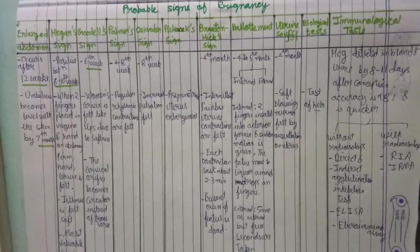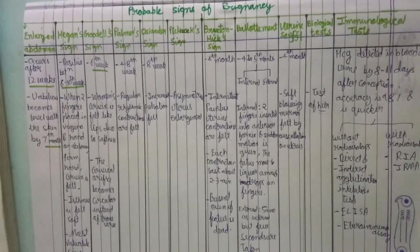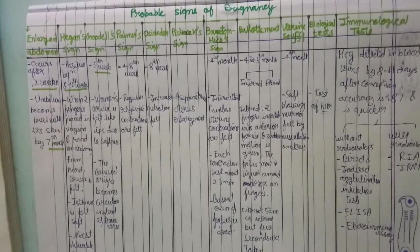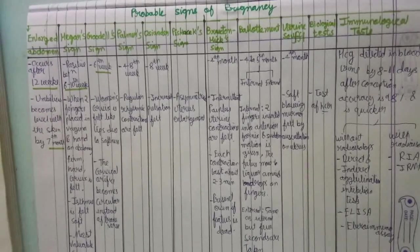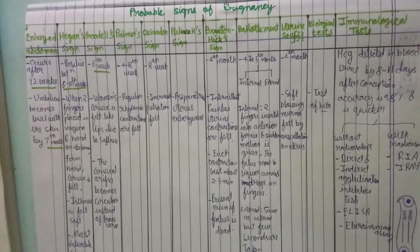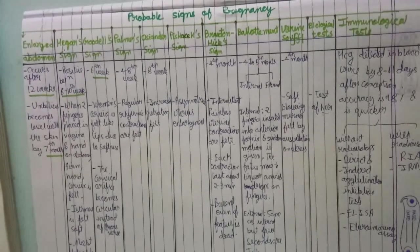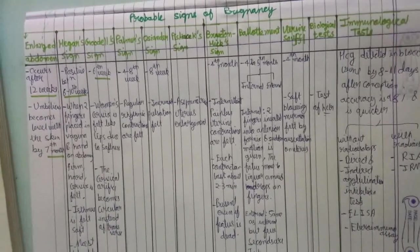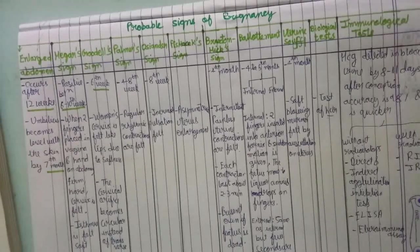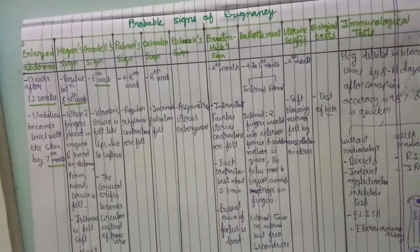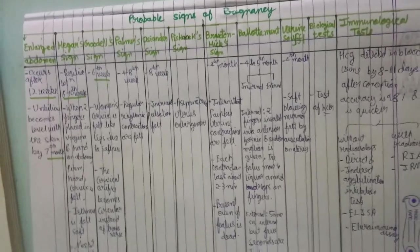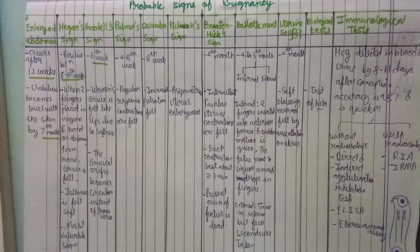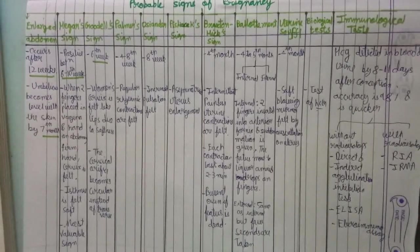Biological tests are based on the HCG — human chorionic gonadotrophin — hormone reaction. Some notable tests include the Aschheim-Zondek test, the Rapid Rate test, the Friedman test or female rabbit test, the female toad test, and the Galli Mainini test or male frog test.